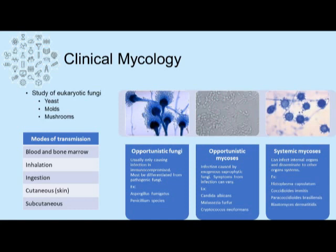Lastly, we have systemic mycosis, which infect internal organs and disseminate to other organ systems. Examples of systemic mycosis include Histoplasma capsulatum, Coccidioides immitis, Paracoccidioides brasiliensis, and Blastomyces dermatitidis.